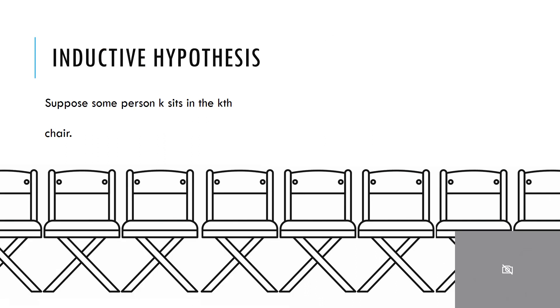In my inductive hypothesis I assume that person k sits in the kth chair. Can I show now that person k plus one will sit in the k plus one chair?